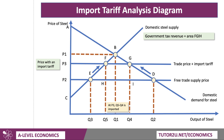Remember that falling consumer surplus was P3-G-D-P2. Some of that went to the producer, some went to government tax revenue, but some is lost entirely because of the higher price paid for steel. In fact, there are two deadweight welfare loss areas: E-F-H and G-D-I. Those are the two areas of deadweight welfare loss as a result of the tariff protection.